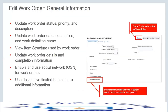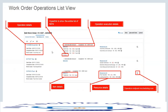Under the Operations tab, you can see all operations for the work order, along with the components and resources for each operation — how much is required and how much has been issued. All details are defaulted from the work definition. Using the pencil icon, you can edit operations, add or delete operations, add or remove components, add or delete resources, and make any modifications you need.